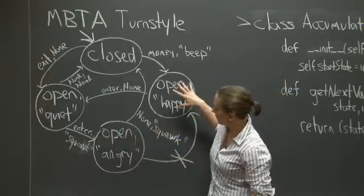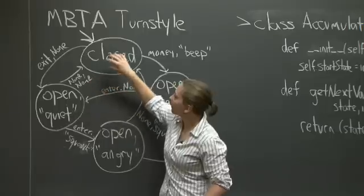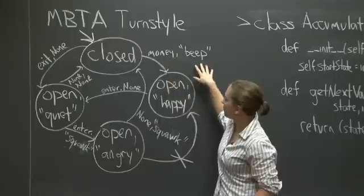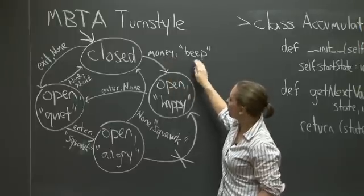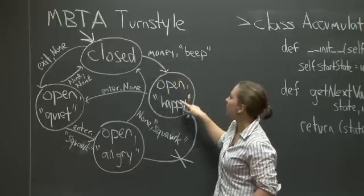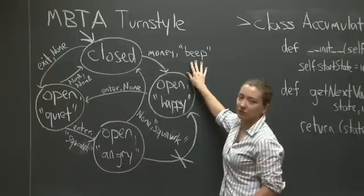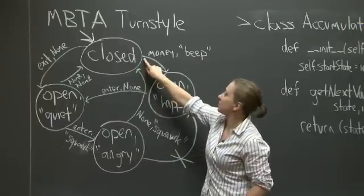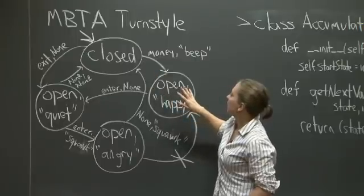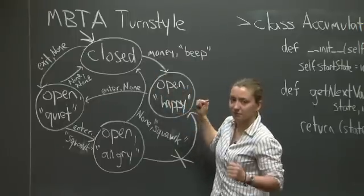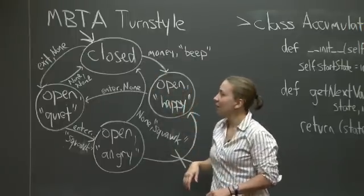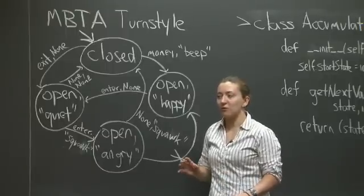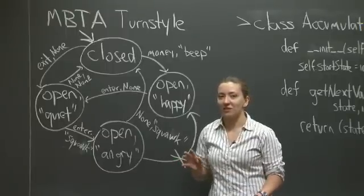One more time. Here are the states. Inputs are the first of these two pairs. Outputs, as a consequence of the transition, is the second of these two pairs. And the transition function is represented by the directed edge and the new state. Once you have all those sets figured out, you can start talking about how to implement state machines in software.